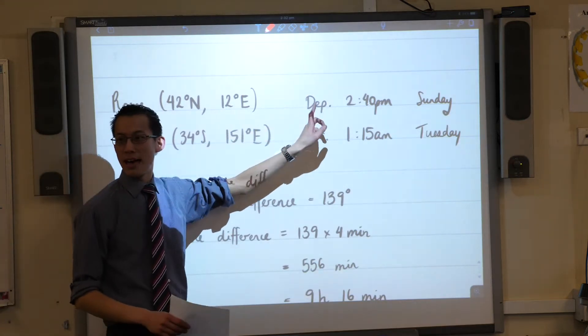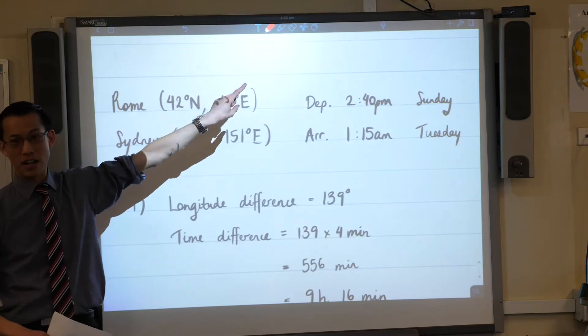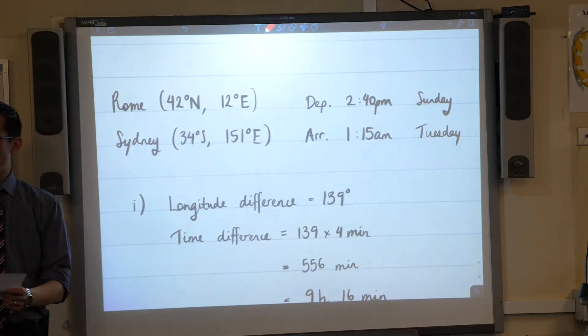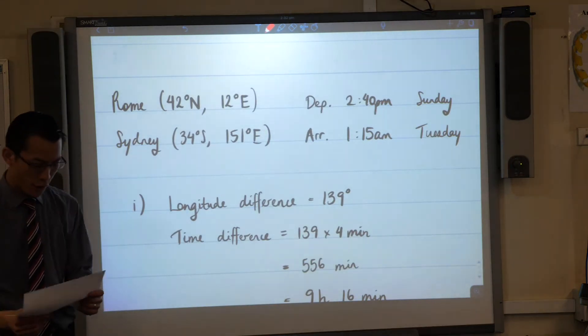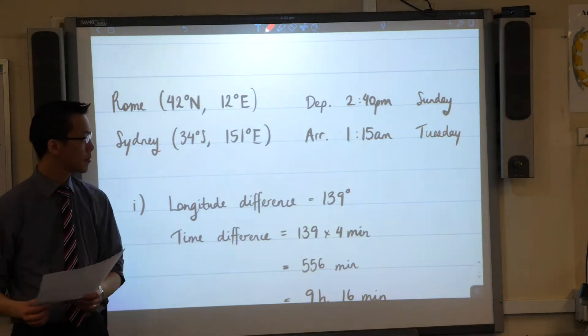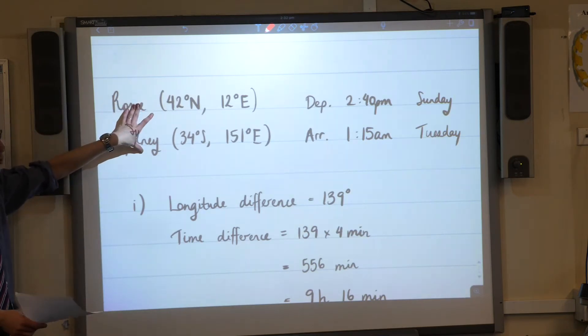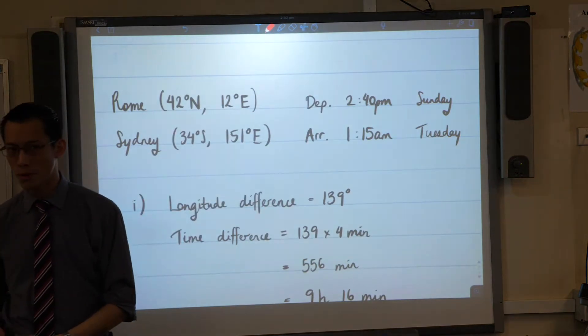I've got a departure time and an arrival time. I've also noted the days because they will factor in a little bit later. Then I thought about what question they're asking and what information is relevant. The first question is about time difference. If you're thinking about the time difference between two locations, you've got latitude and longitude, but only one of them is important. Which one?